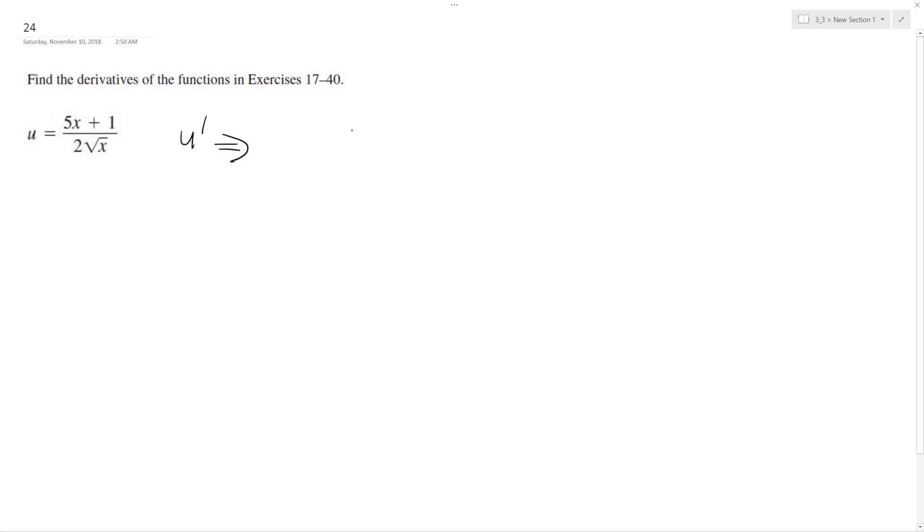So u prime is going to be equal to the derivative of the numerator, which is 5, times the denominator, minus 5x plus 1, the numerator, times the derivative of the denominator. And that's going to be 1 half times x raised to the negative 1 half, and all this is going to be over the denominator squared.